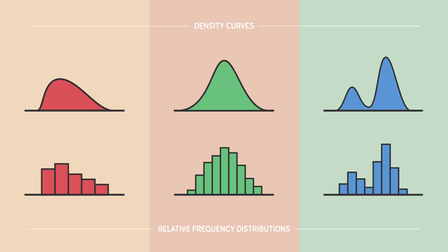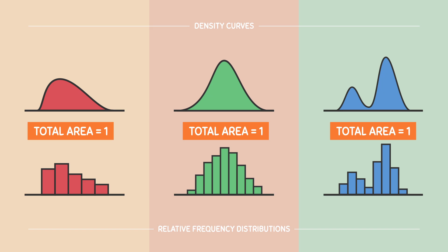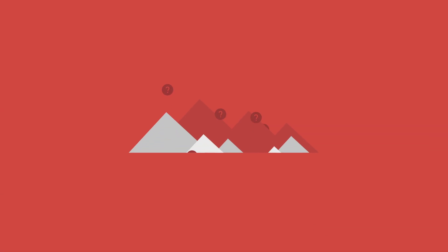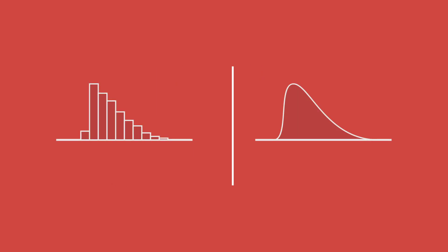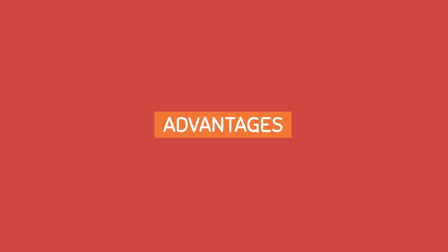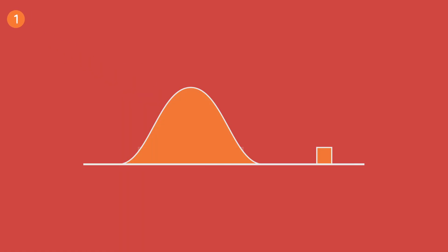Like a relative frequency distribution, density curves always have an area that is equal to 1 or 100%. Now you might be wondering: what's the point of a density curve? Why don't we just stick to using histograms? Well, density curves have a few advantages over histograms. First of all, density curves give us an idealized picture of a population or dataset without considering irregularities and outliers. Because of this, it really gives us a great overall picture of the actual distribution and its tendencies.